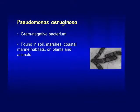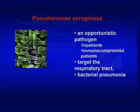Pseudomonas aeruginosa is a rod-shaped gram-negative bacteria with unipolar motility. They are found in many places, including plants and animals. Pseudomonas aeruginosa is an opportunistic human pathogen.